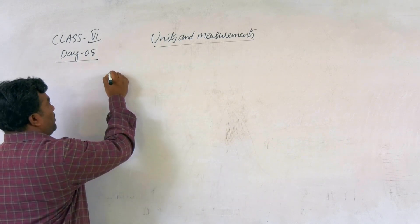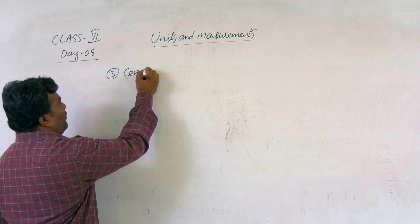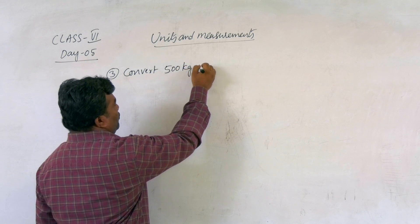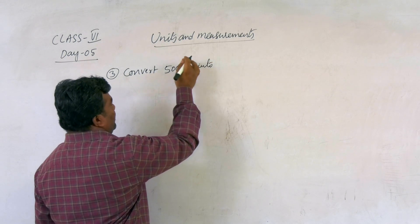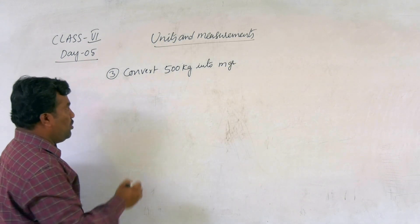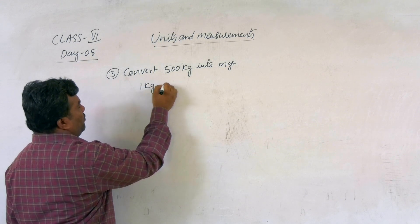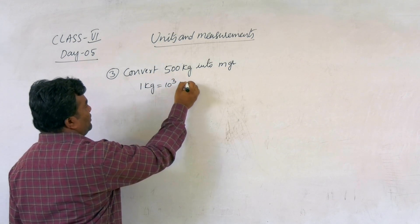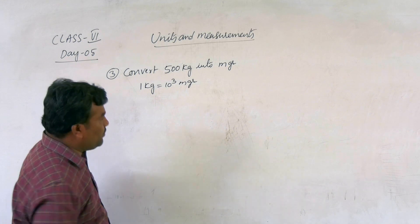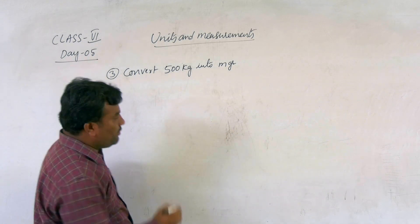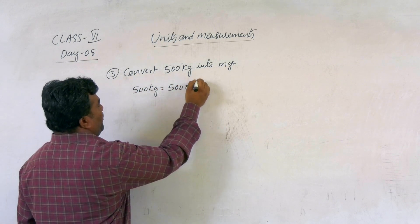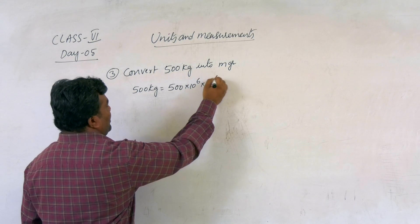Third question: convert 500 kg into milligrams. Generally, 1 kg equals 10 to the power of 3 grams and 1 milligram equals 10 to the power of minus 3 grams. Or you can write directly: 500 kg equals 500 into 10 to the power of 6 into 10 to the power of minus 6 kg.